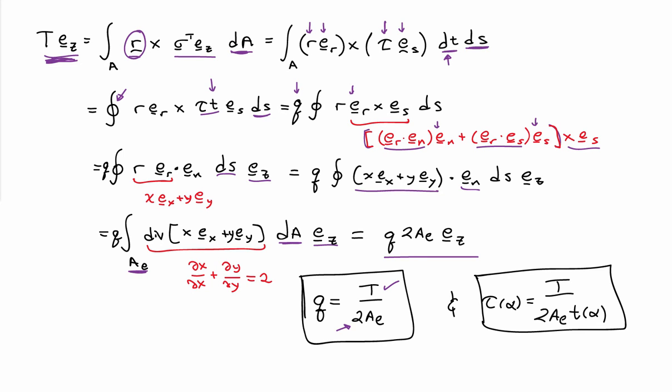And if I want, I can connect that to the shear stresses by dividing by the thickness of the wall. So the shear stress at any location alpha on the cross-section is equal to the internal torque T divided by twice the enclosed area 2Ae, divided by the thickness at that angle. This gives the connection between torques and shear stresses via the shear flow, namely that the shear flow is constant on any cross-section due to the thinness assumption.